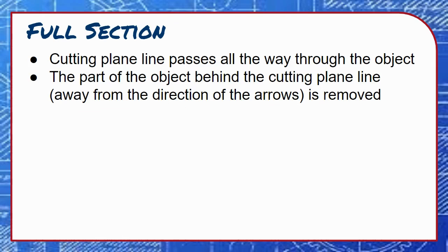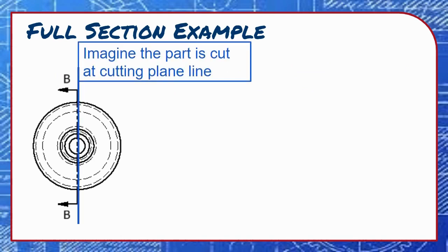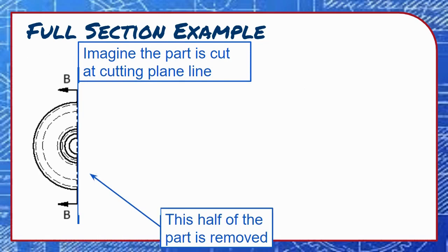Let's see an example. Imagine that the part is cut at the cutting plane line and the portion opposite from the arrowheads is removed. If we look at the object in the direction of the arrowheads, we would see this section view.